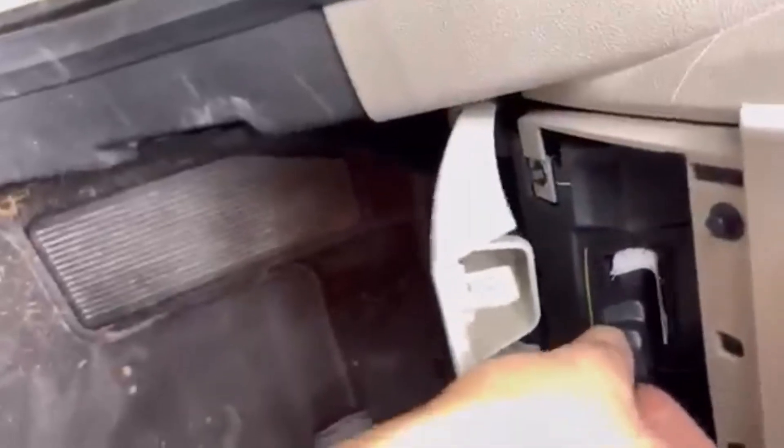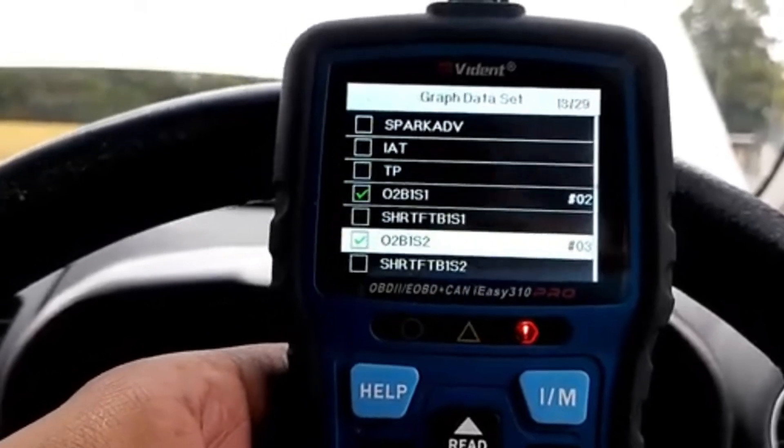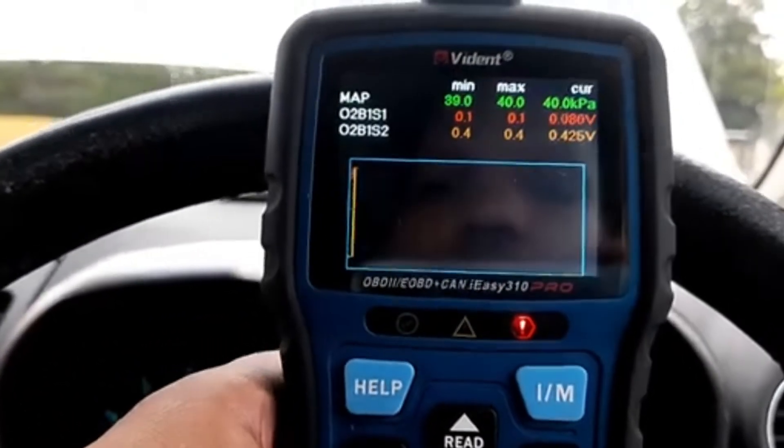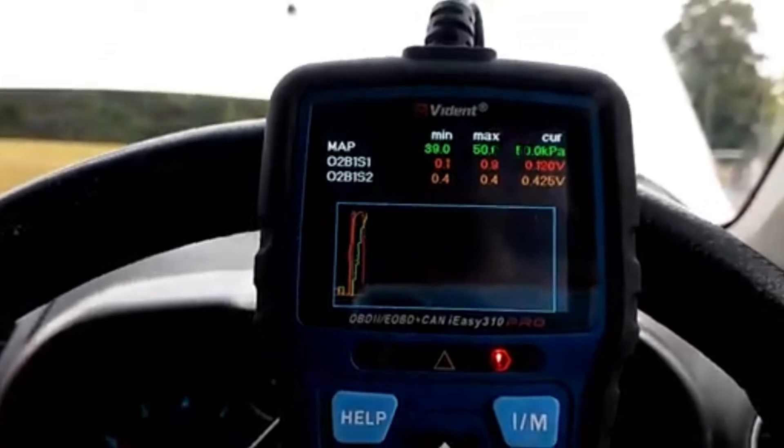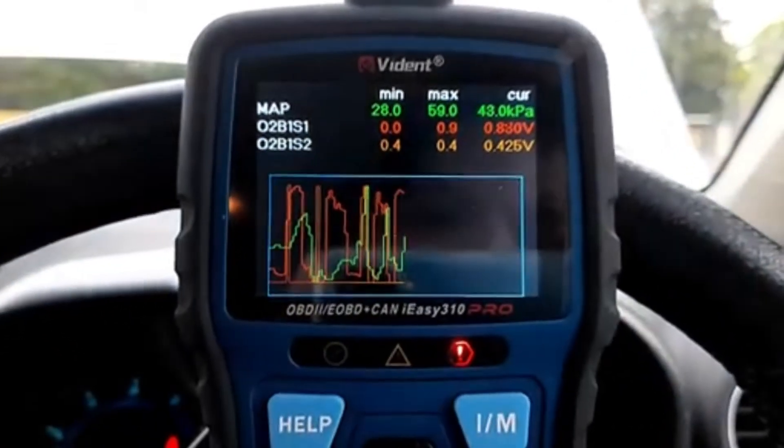When using an OBD2 scanner, simply navigate to live data, select the oxygen sensor voltage readings, and observe how the signal fluctuates during normal driving conditions. Check the link in the description for a good OBD2 scanner.